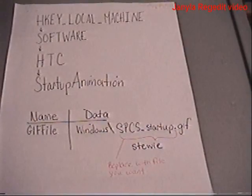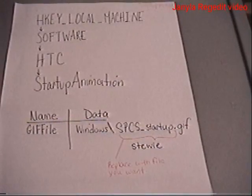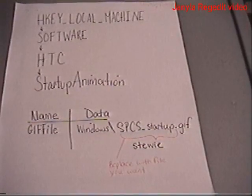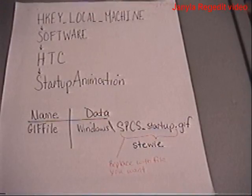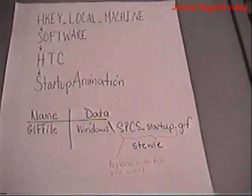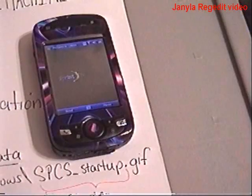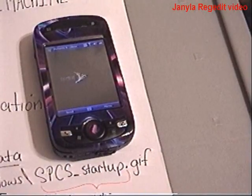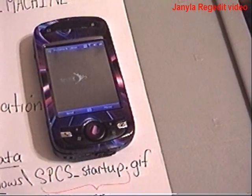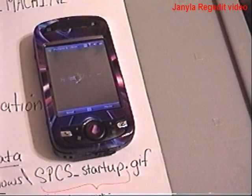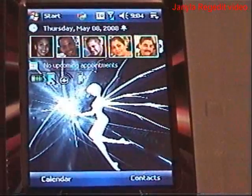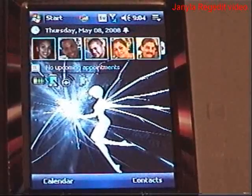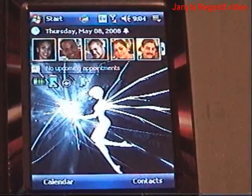What you're looking at is the path that we're going to use in the registry editor to change your picture. I keep referring to it as a picture, but it's like an animation for the new SprintSpeed logo. This is the animation that we will be changing into a picture of our own. You're going to choose a picture of your choice, and you have to remember it has to be in GIF format — that's .gif.